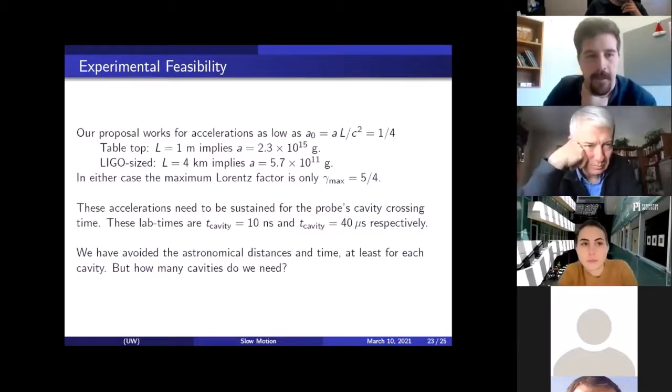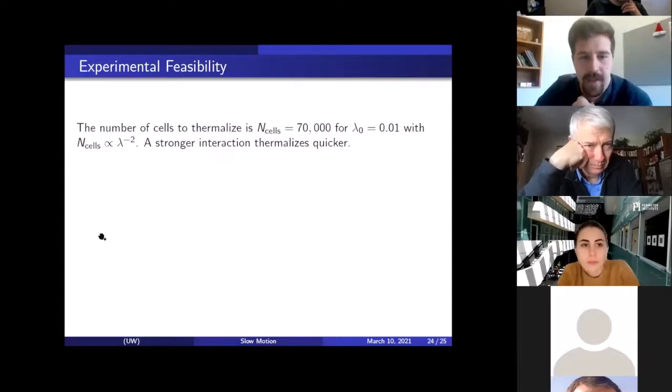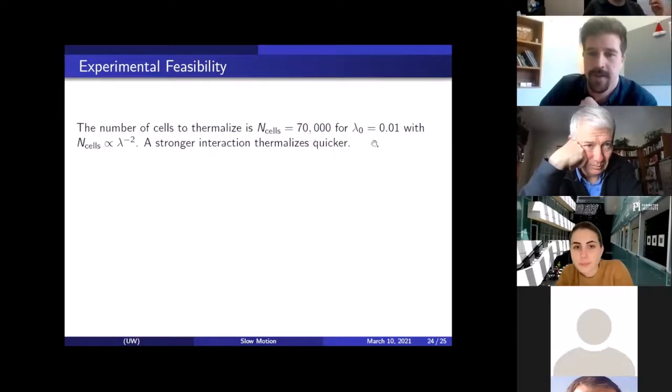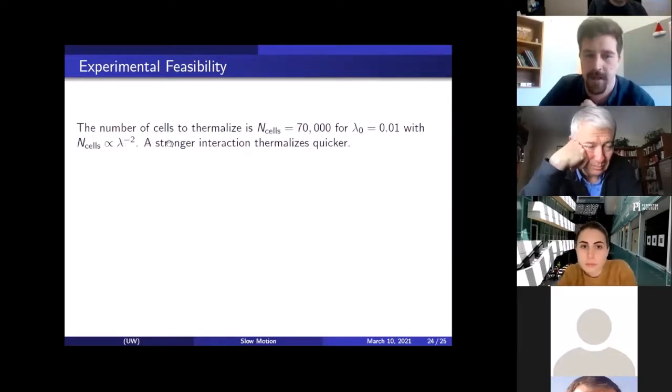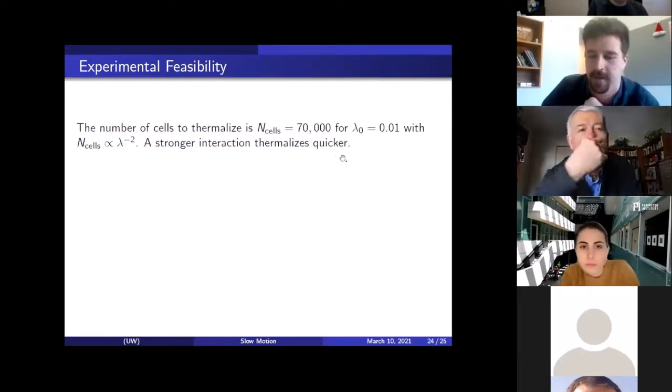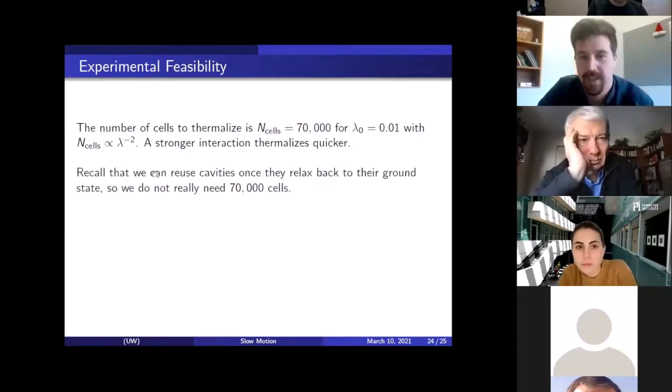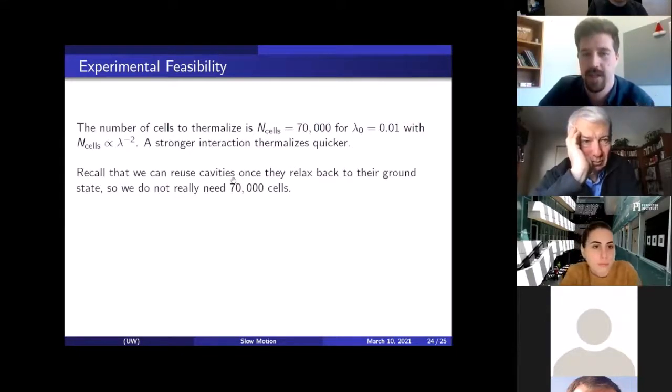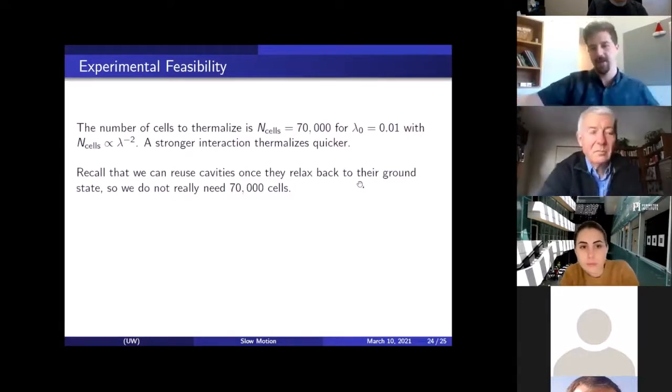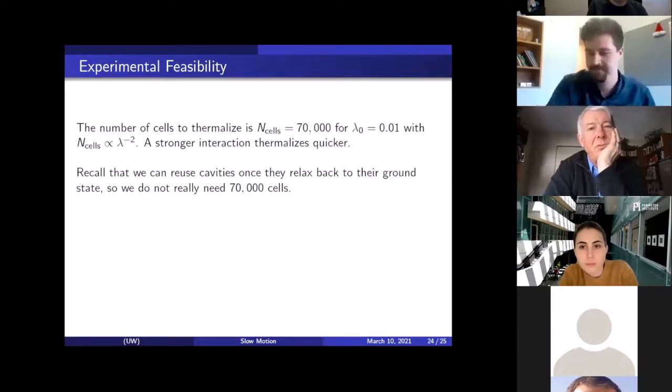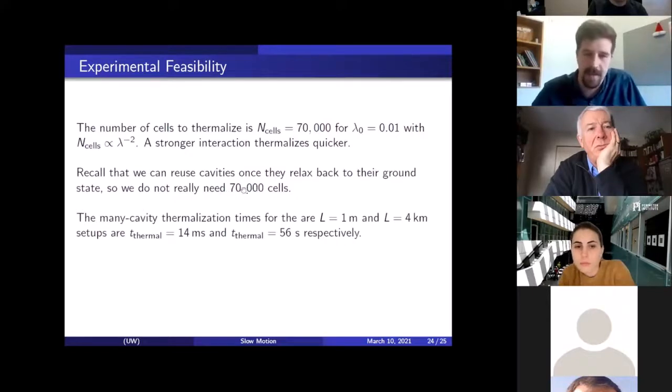And so what that means in terms of times is that the accelerations the probe needs to undergo need to be sustained across the cavity. And the cavity crossing times in the lab time is like 10 nanoseconds or 40 microseconds in the two length scales we're talking about. So these times aren't tremendously long. So we've avoided the astronomical distances and time scales at least for one cavity. But what if we have to go through a huge number of cavities to get this to work? That obviously wouldn't be good. So we crunched the numbers and it turns out that you need something like 70,000 cells for this coupling strength that we talked about here. And this end cells number scales with the coupling strength. So if you have a stronger interaction, it thermalizes quicker.